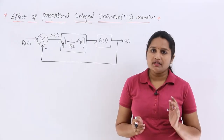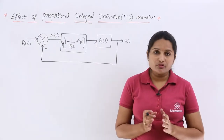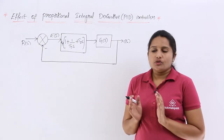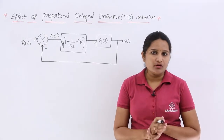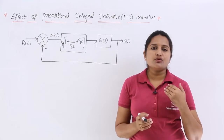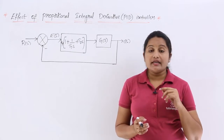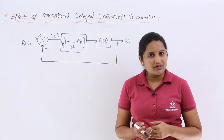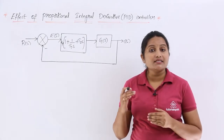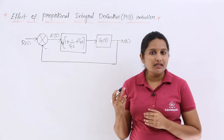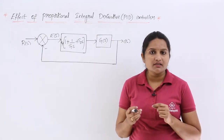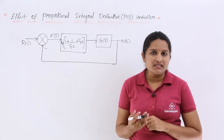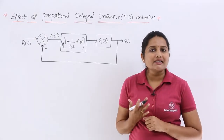We already discussed these effects in the previous class. The PID controller increases the stability of the system by introducing two zeros in the numerator. It will also decrease the steady-state error by increasing the type number of the system, meaning it will introduce one pole at origin, and by increasing the type number, the steady-state error decreases.